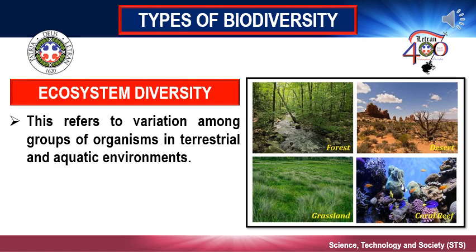An example of ecological diversity on a global scale would be the variation in ecosystems such as deserts, forests, grasslands, wetlands, and oceans. Ecological diversity is the largest scale of biodiversity, and within each ecosystem there is a great deal of both species and genetic diversity.